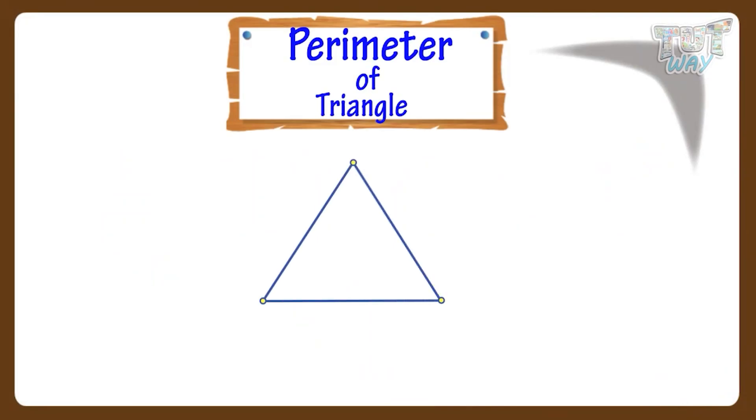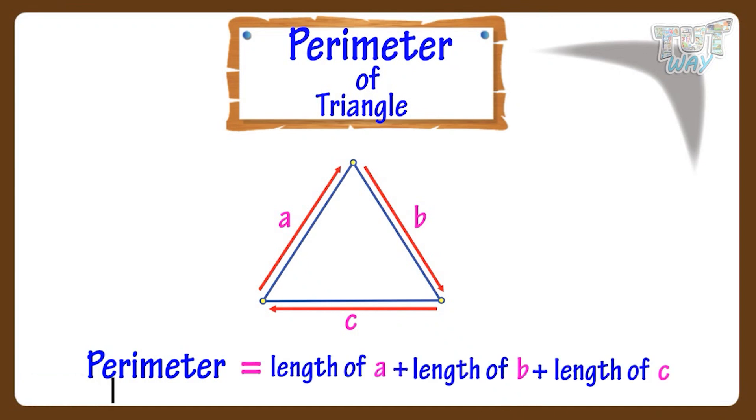Parameter is the distance around the edges of a triangle. If we have to find the parameter of a triangle, we just add up the lengths of all the edges of a triangle.